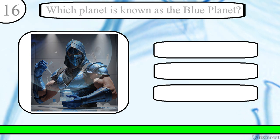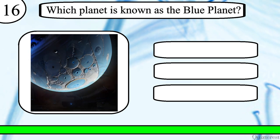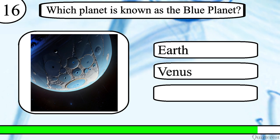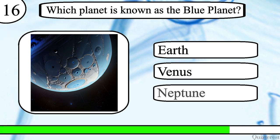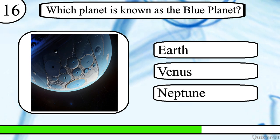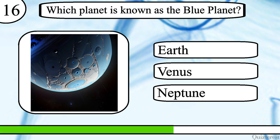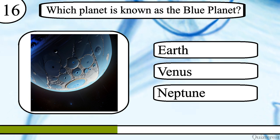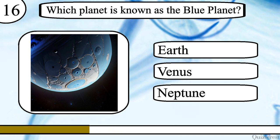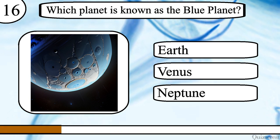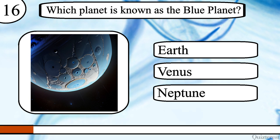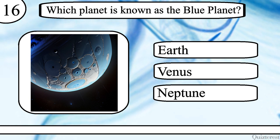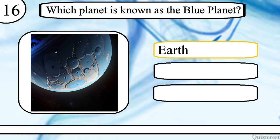Question 16. Which planet is known as the blue planet? Earth, Venus or Neptune? The correct answer is Earth.